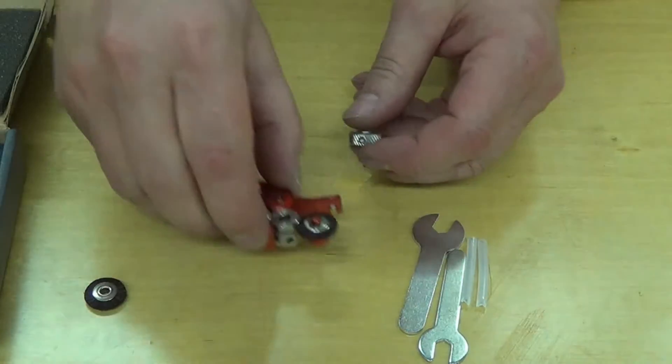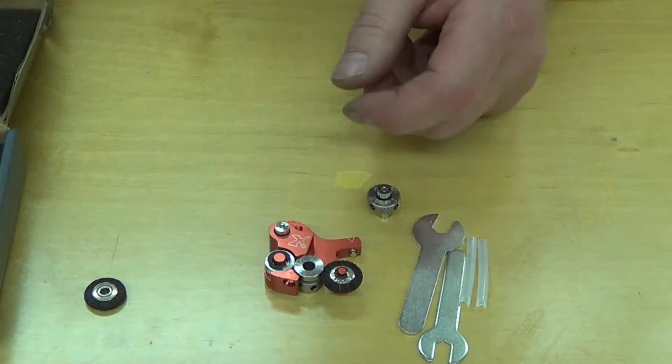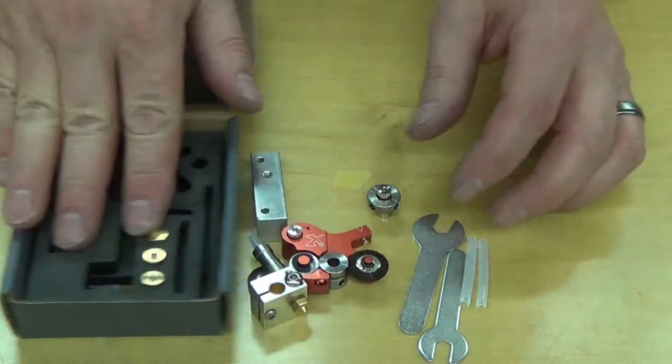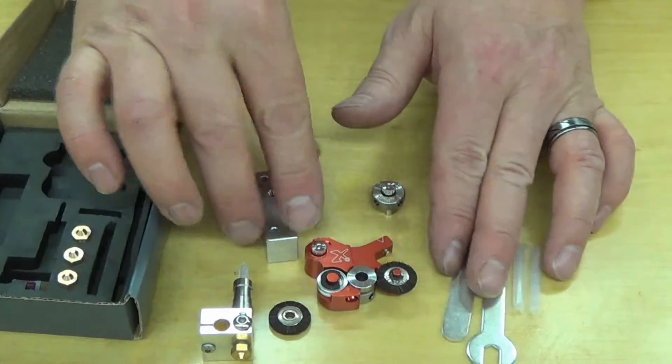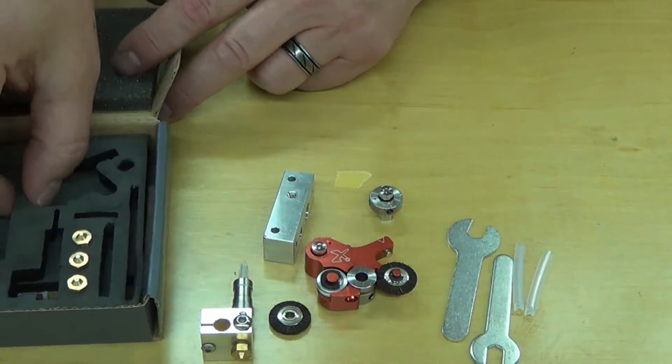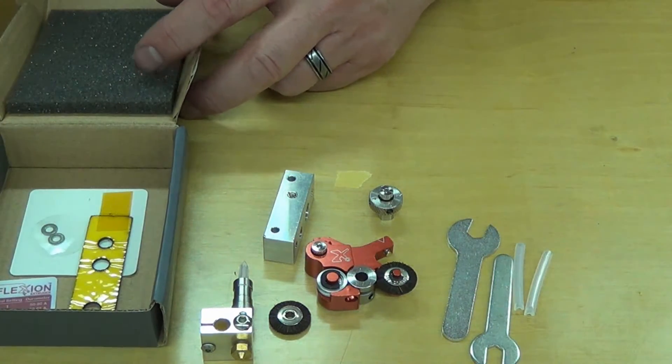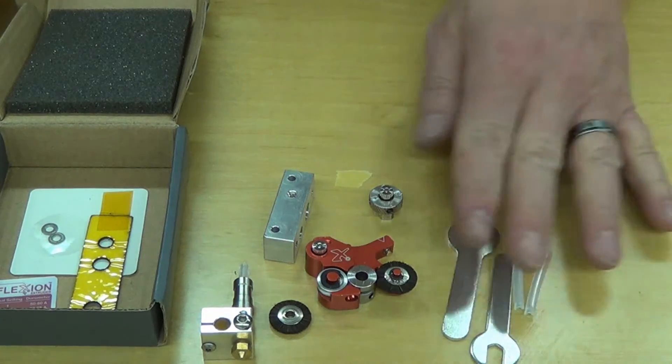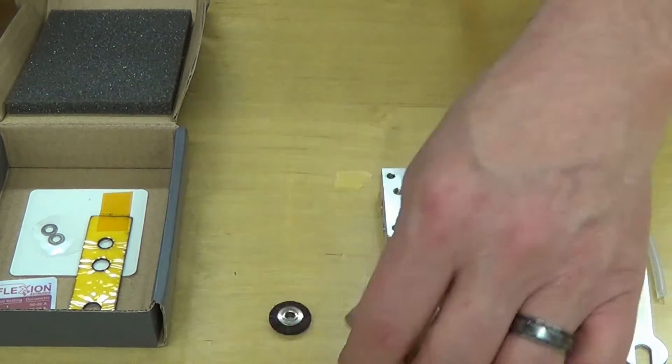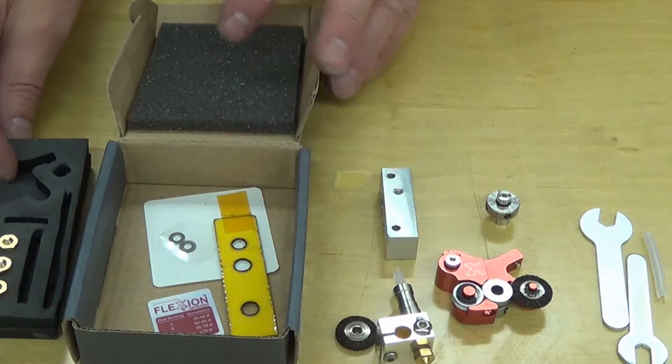Let's take everything out of the box here and lay it out. Now I know this is all designed for a Cartesian printer, and I'm going to try and make it work with a Delta. That's my goal.